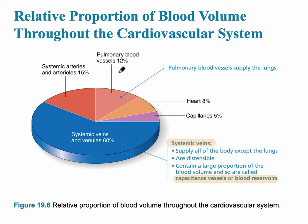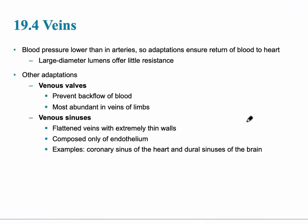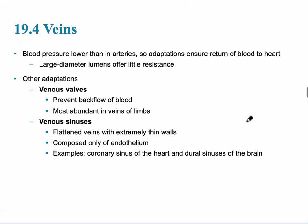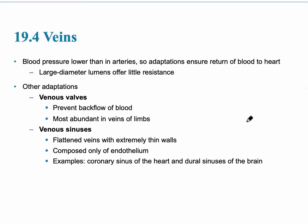Systemic arteries and arterioles contain only about 15% of the blood because the pressure is much higher there. The heart holds 8% where pressure is really high, and capillaries hold 5% where pressure is quite low. Overall, blood pressure in the veins is much lower than in the arteries.